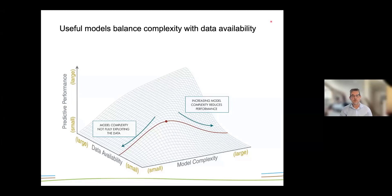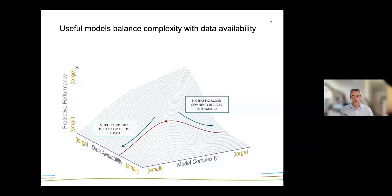Will RORB still be relevant in 10 to 20 years? That depends on whether it can maintain the balance between complexity and available data. Data availability is increasing — digital elevation models are one example — so RORB needs to adapt. There are also competing products like rain-on-grid modeling that better account for DEMs. There's interest from the hydrology community in rain-on-grid type modeling, so it'll be interesting to see how it develops.